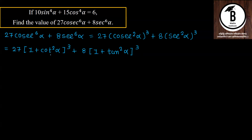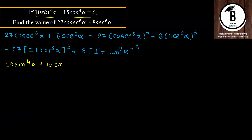Value किसकी find out करनी है हमको? cot की और tan की। हमको दिया गया है 10 sin⁴α + 15 cos⁴α = 6, इसके ऊपर से cot और tan की value find out करनी है। tan = sin/cos होता है, तो इसको हम cos⁴α से divide कर सकते हैं।